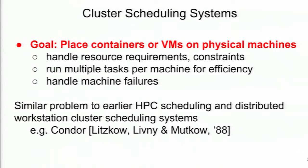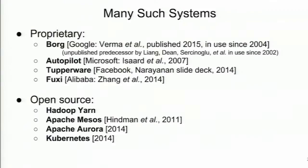The cluster scheduling system's job — whether containers or VMs — is to place tasks on physical machines in the data center, handling different resource requirements like 10 gigabytes of memory or 16 cores of computation, and handling machine failures. This is similar to earlier HPC and distributed workstation scheduling, like Condor, except it's all in a big centralized facility. Google has one called Borg in use since 2004. Pretty much every company has one; there are many open-source versions too.